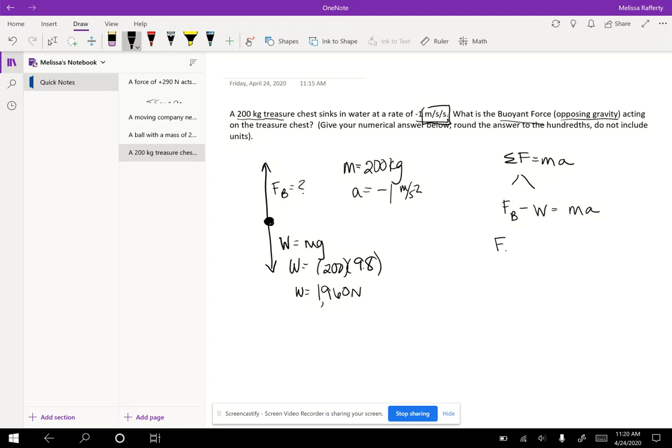Buoyancy is what we're looking for. So we plug that in as the unknown minus the weight, which was 1960, equals mass, which is 200 times acceleration, which is negative one. All right. Let's solve for that right side of the equation. So buoyancy minus 1960 equals 200 times negative one is negative 200.